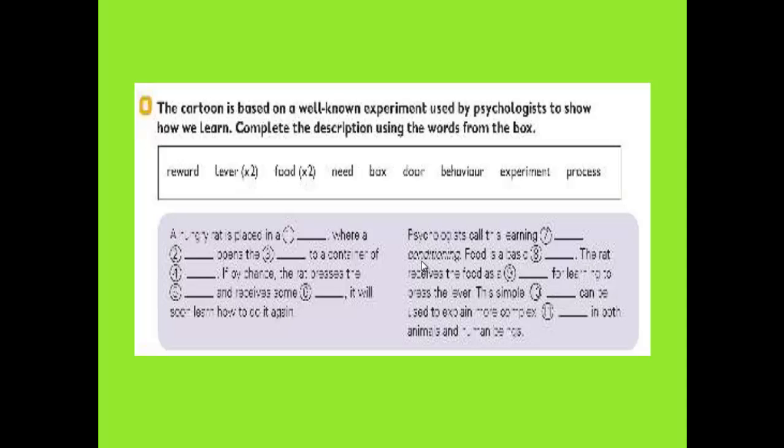Psychologists call this learning process operant conditioning. Food is a basic need and the rat receives the food as a reward for learning to press the lever.